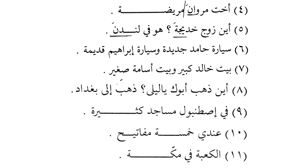Sayyaratu Hamidin jadidatun wa sayyaratu Ibrahim-a qadimatum - Hamid's car is new and Ibrahim's car is old. The ending of Ibrahim will be Ibraheema. The reason it is Mamnoo min as-Sarf is because it is a non-Arabic name. What is more important is to know the reason: Marwan ends with Alif-Noon, Khadija is a feminine name, London is a city name, and Ibrahim is a non-Arabic name.